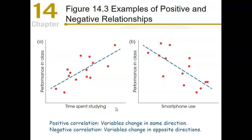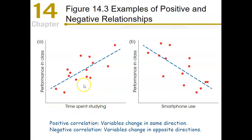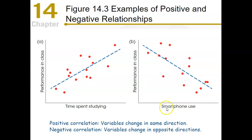Here are examples of positive and negative correlations. In diagram A, we have time spent studying on the x-axis and performance in class on the y-axis — as a student spends more time studying, their performance increases, with dots representing a line sloping upward. In diagram B, smartphone use is on the x-axis and performance in class on the y-axis, showing that as students use smartphones more, their performance diminishes — a line sloping downward.